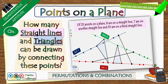Let us suppose on a plane there are 25 points, of which a set of eight points lie on a straight line, meaning they are collinear. Another set of seven points lie on a different straight line, and yet another set of ten points lie on a third straight line. The question is: how many straight lines can be drawn by joining these points, and likewise how many triangles can be drawn by joining these points as vertices?